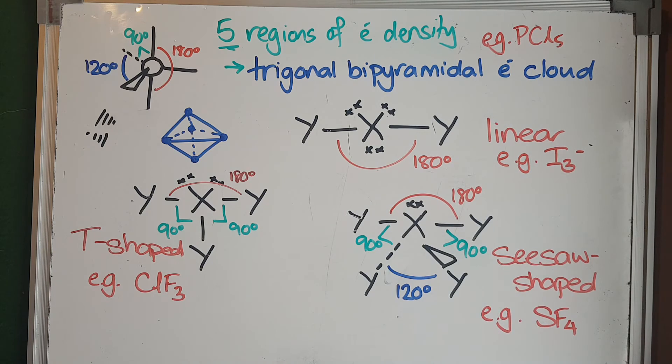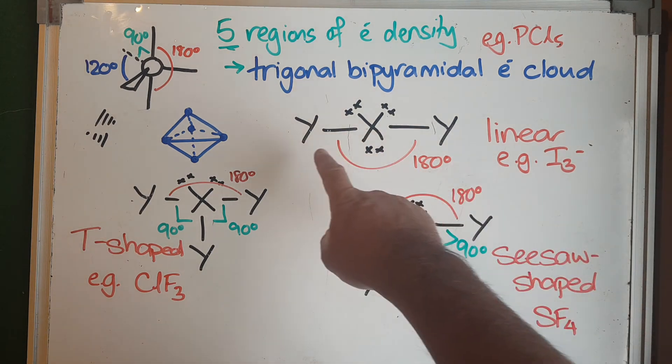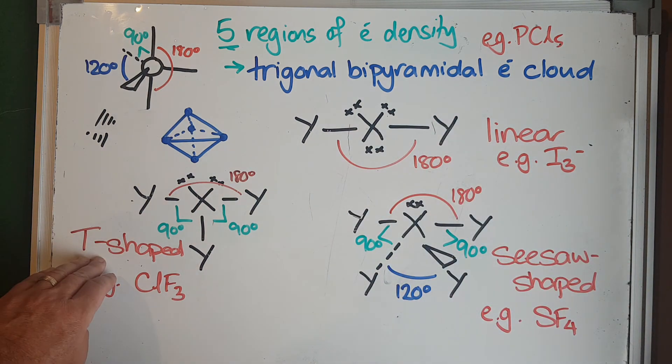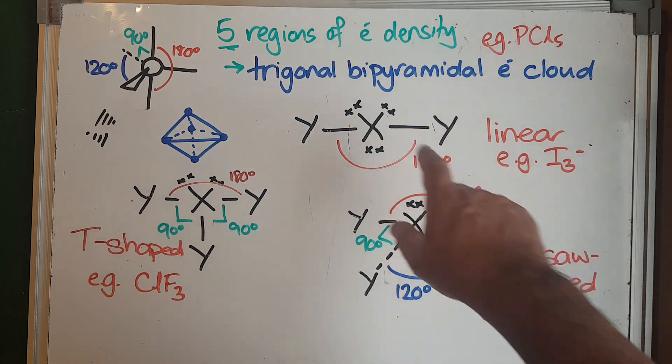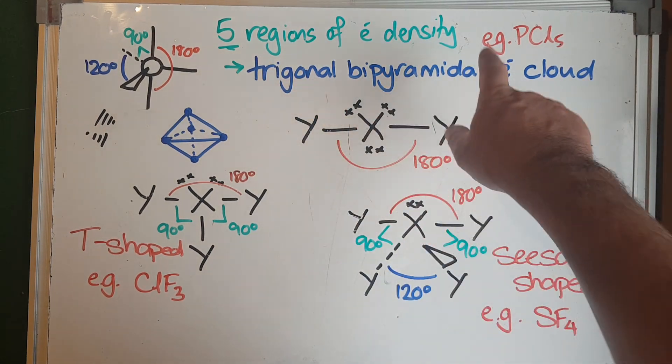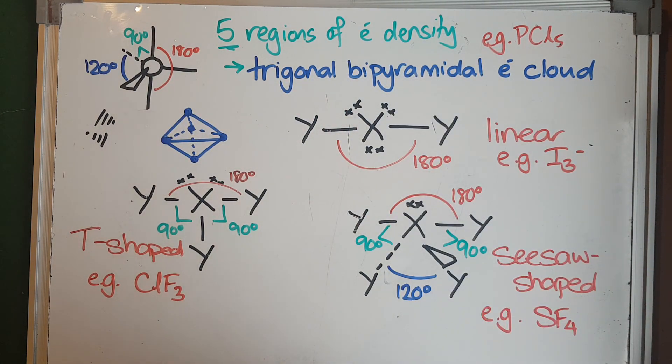So those are our new shapes with five regions of electron density. We still have to look at six regions as well, which will have some new shapes, but a lot of them are similar to these, so it's not too bad. When the octet is expanded, you're going to get some new shapes: linear is still familiar, but now we have T-shaped, which is brand new, seesaw-shaped, and trigonal bipyramid when all of them are filled in with atoms.